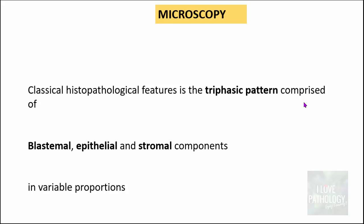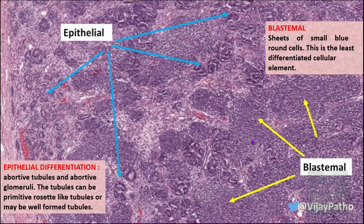Microscopically, the classical histopathological feature of Wilms tumor is a triphasic pattern with three components. If all three are present it is triphasic; if only two are present it is called biphasic Wilms tumor. The first component is the blastemal component, consisting of sheets of small round blue cells — the least differentiated cellular element.